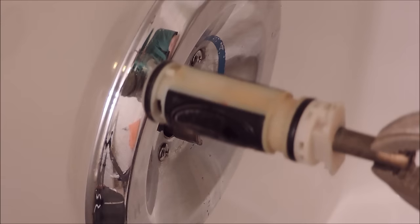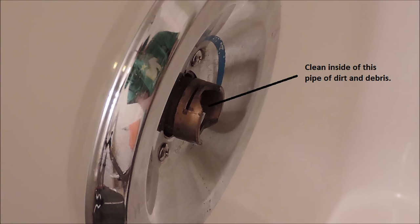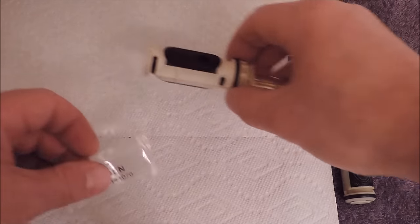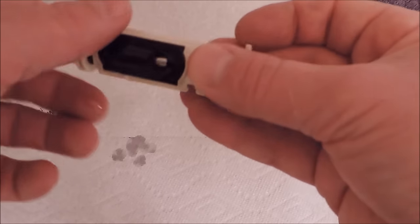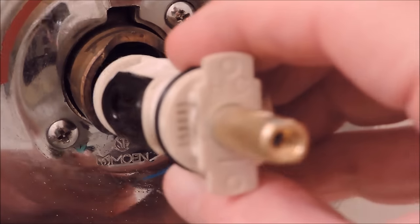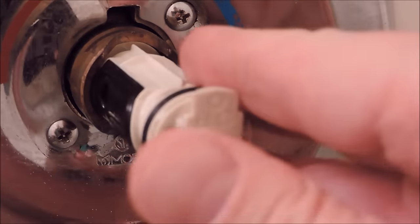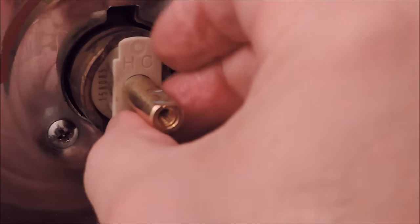Now once you get the cartridge out, you want to take a cloth or rag and clean the inside of the pipe of any dirt and debris. Now let's put a little lubricant on the cartridge. And you just spread it around a little bit on both sides and stick the cartridge into the pipe. Don't go there, girlfriend.